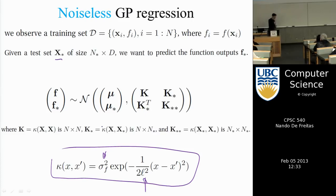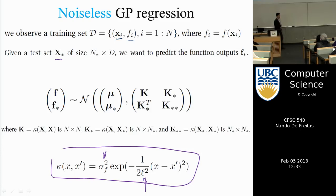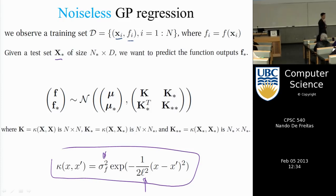We started going over Gaussian processes when there is no noise. To recap, our dataset consisted of points and evaluations of a function. The important thing is: all I need to do is evaluate the function. I do not need a mathematical expression for that function.